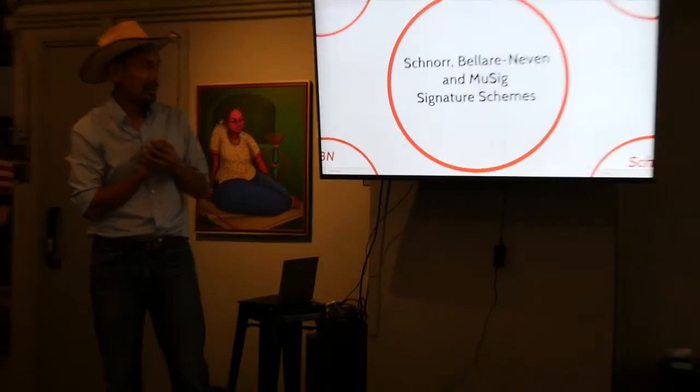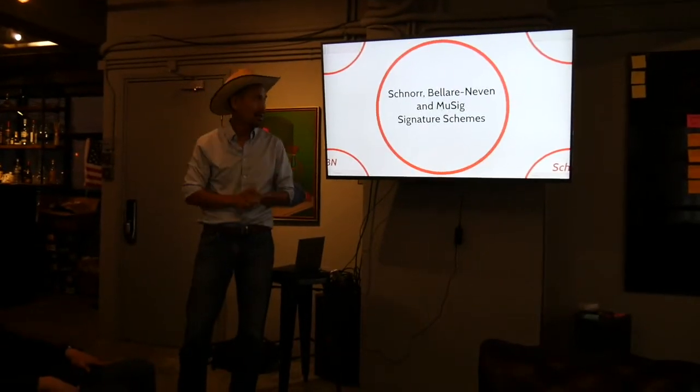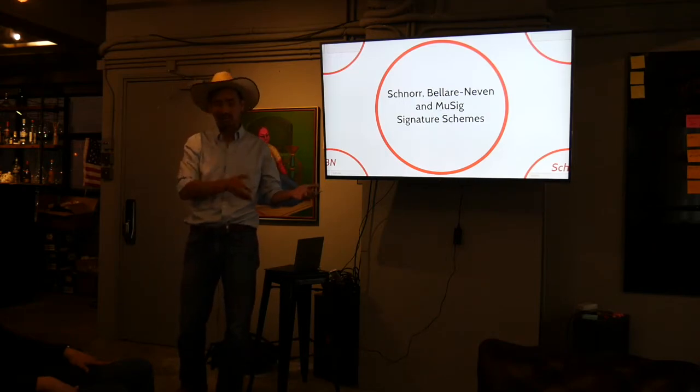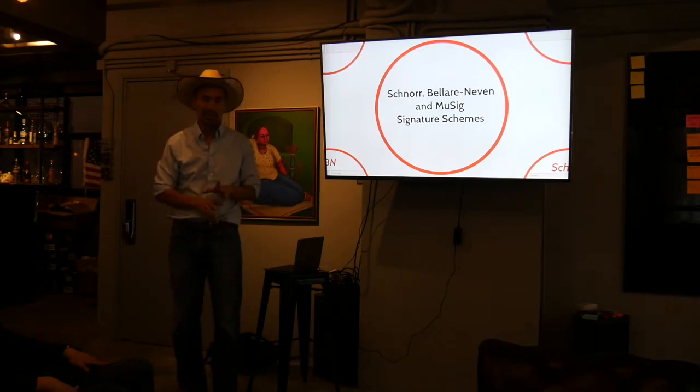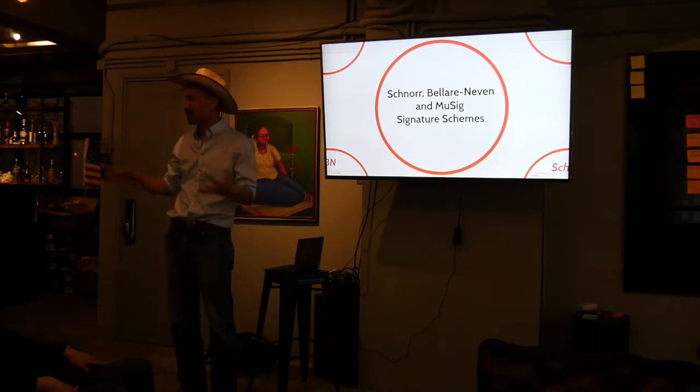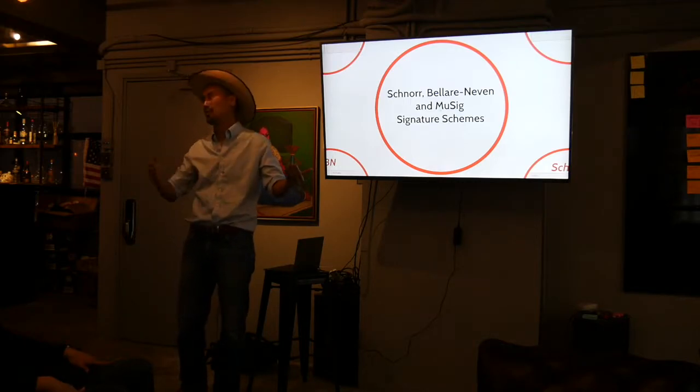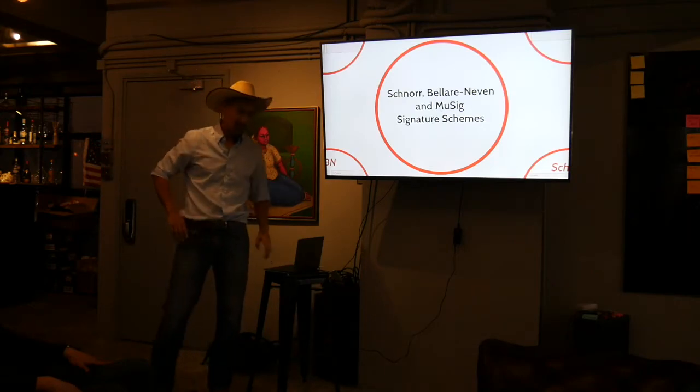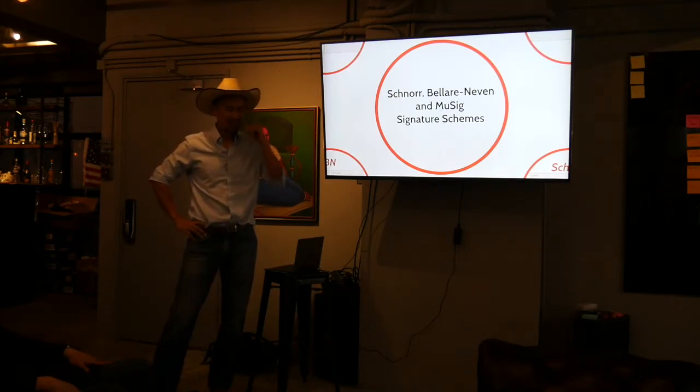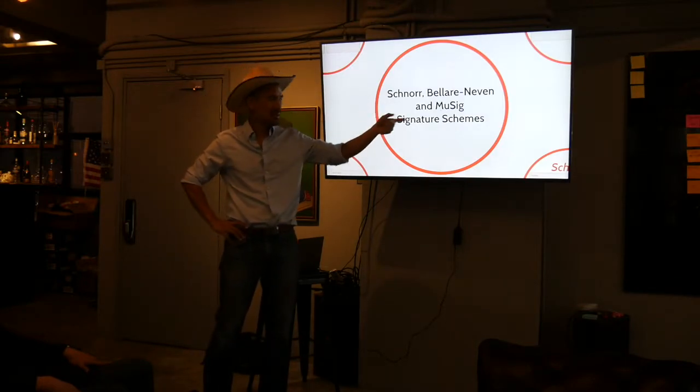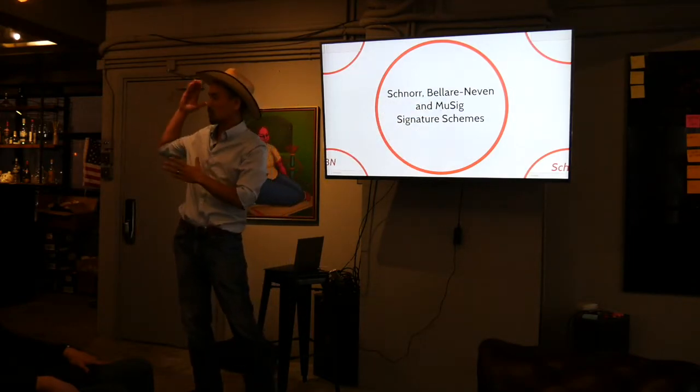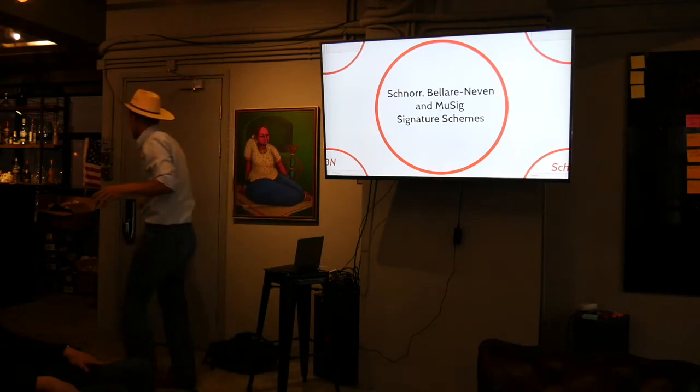Anyway, yeah, so I'm going to talk about Schnorr, Bellare-Neven, or BN, and Musig signature schemes. This is something that the core devs have been working a lot on, and there's certain interesting properties to each, and I hope to give you guys sort of like a preview of what's coming down the pipe with Bitcoin. Because these are very much in the spirit of sort of what they want to do. Unfortunately, a lot of the terminology gets mixed up, so people just say Schnorr, but what they really mean is Bellare-Neven or Musig. So I'm hoping to sort of give you a clear distinction of what's going on.